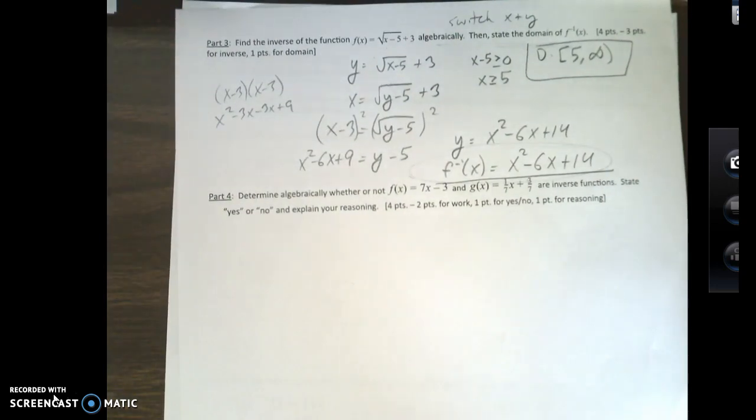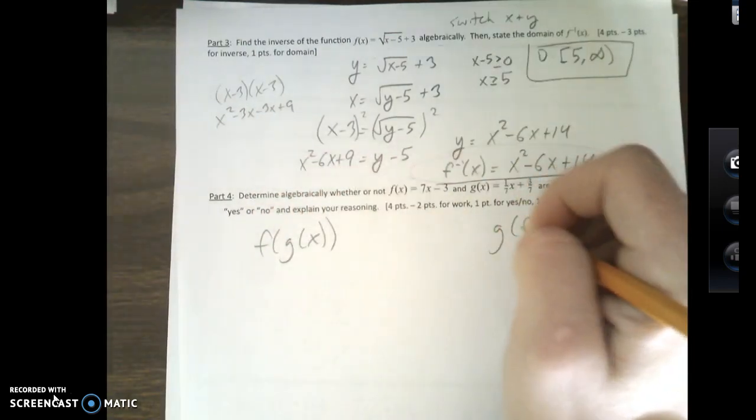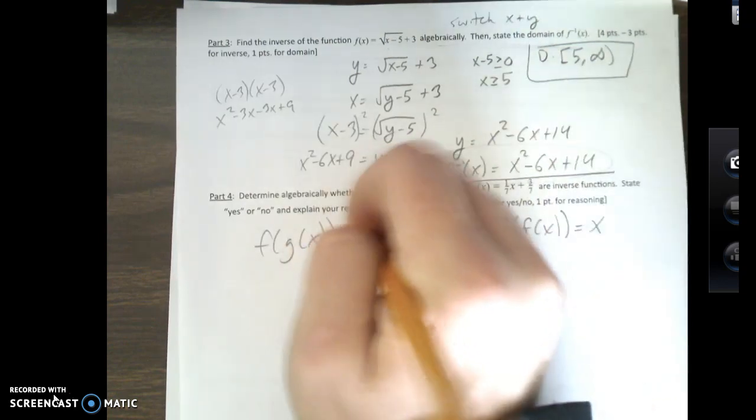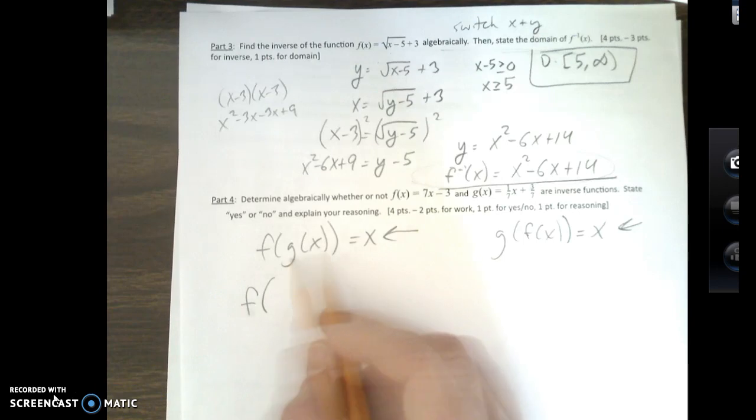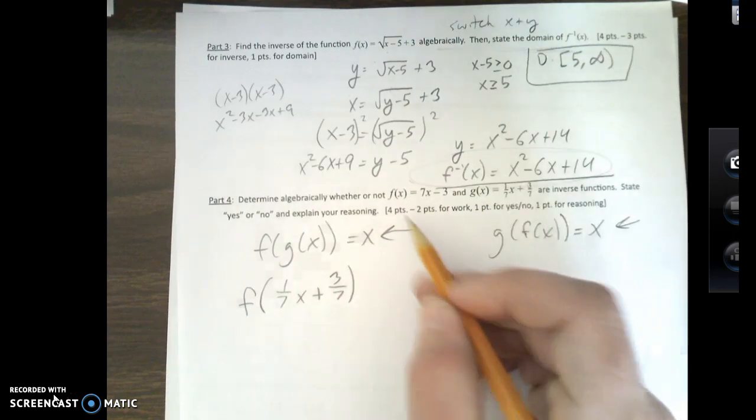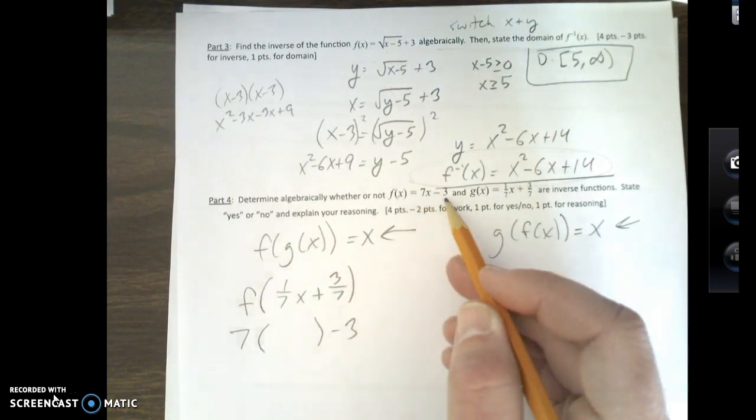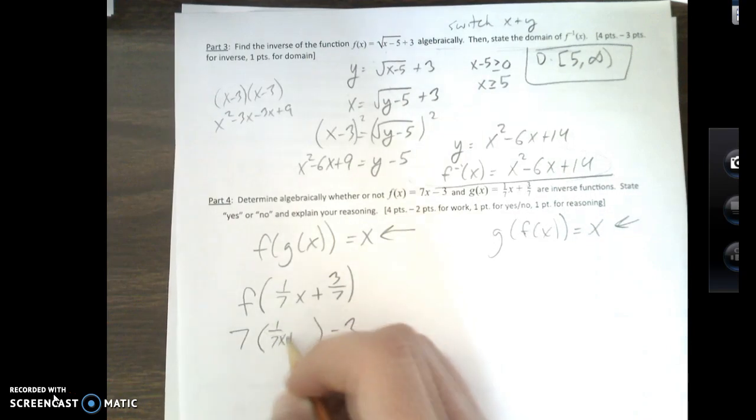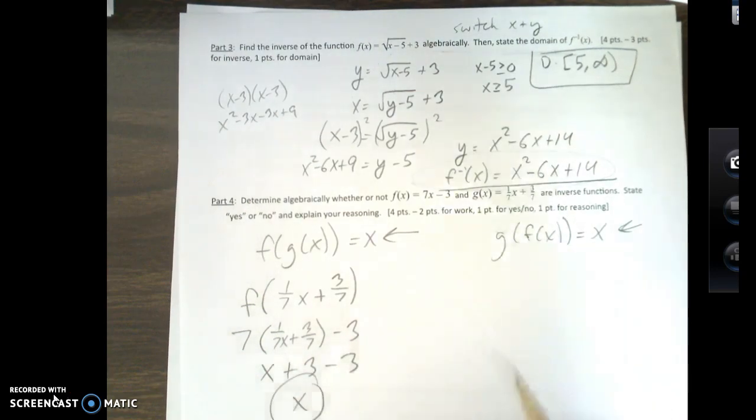Last part here, then. Determine algebraically whether or not f of x equals 7x minus 3 and g of x equals 1/7 x plus 3/7 are inverse functions. State yes or no. You must do f of g of x and you must do g of f of x. And they both have to equal x. This is what I'm after. Alright. So, if I don't get that, it's not an inverse. So, let's start over here. f, g of x. If I put 1/7 x plus 3/7 in. Now, take a look at f. It's 7 times something minus 3. Just look at this with me. 7 times something minus 3. This is your something. Please don't panic because nice things are about to happen. 7 times 1/7 cancels out. I get just x. 7 times 3/7 cancels out. I get plus 3. What is 3 minus 3? x. Hooray!